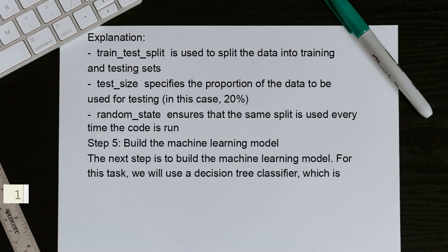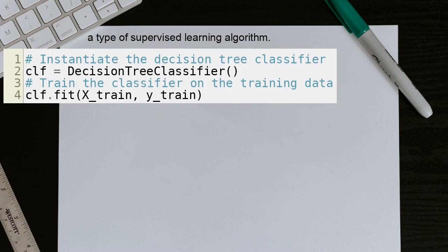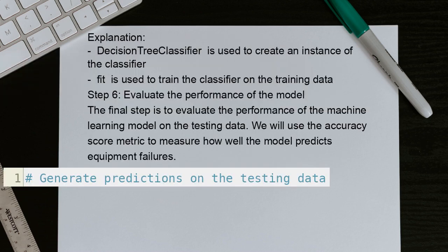Step 5: Build the machine learning model. The next step is to build the machine learning model. For this task, we will use a decision tree classifier, which is a type of supervised learning algorithm. Explanation: DecisionTreeClassifier is used to create an instance of the classifier. fit is used to train the classifier on the training data.